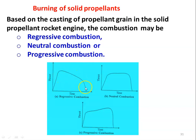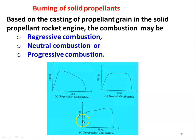In neutral combustion, the thrust produced increases, is maintained constant for some time, then decreases sharply to zero. In progressive combustion, combustion is initiated and the thrust increases slowly, then rises to a higher value, and slowly increases to a maximum value before decreasing. Depending on the requirement, we may arrange for regressive, neutral, or progressive combustion based on the application of the solid propellant rocket.